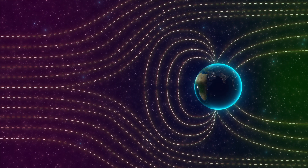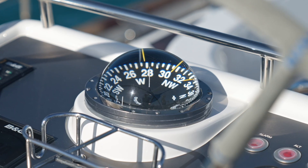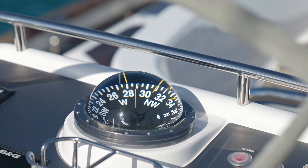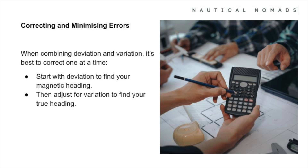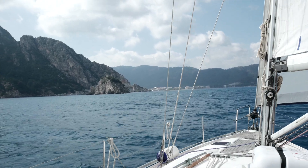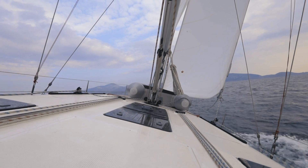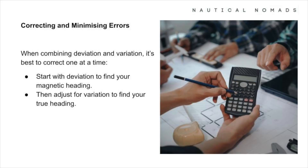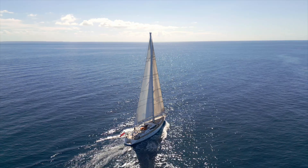Beyond variation and deviation, you might encounter magnetic anomalies — disruptions in the Earth's magnetic field caused by natural or man-made features like shipwrecks or pipelines. While rare, they can throw off your compass readings, so always refer to your charts which usually mark known anomalies. To minimise errors, keep magnetic materials and electronic devices away from your compass, perform a swing check comparing compass readings to known bearings from landmarks, and if necessary use corrector magnets. When correcting, handle deviation first to find your magnetic heading, then adjust for variation to find your true heading.